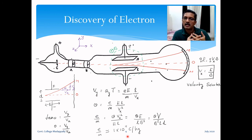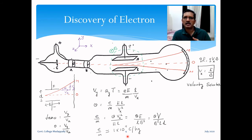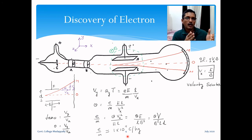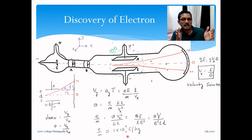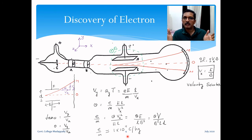When supersaturated vapor is suddenly expanded, it cools and condensation occurs around ions acting as centers. Wilson later developed this idea to design the first cloud chamber. In 1899, Thomson and his students made measurements on charged clouds to estimate the electric charge of the electron. They found that the electron's charge was between 1.1 × 10⁻¹⁹ C and 2.3 × 10⁻¹⁹ C — setting a range for the possible electric charge of these particles.